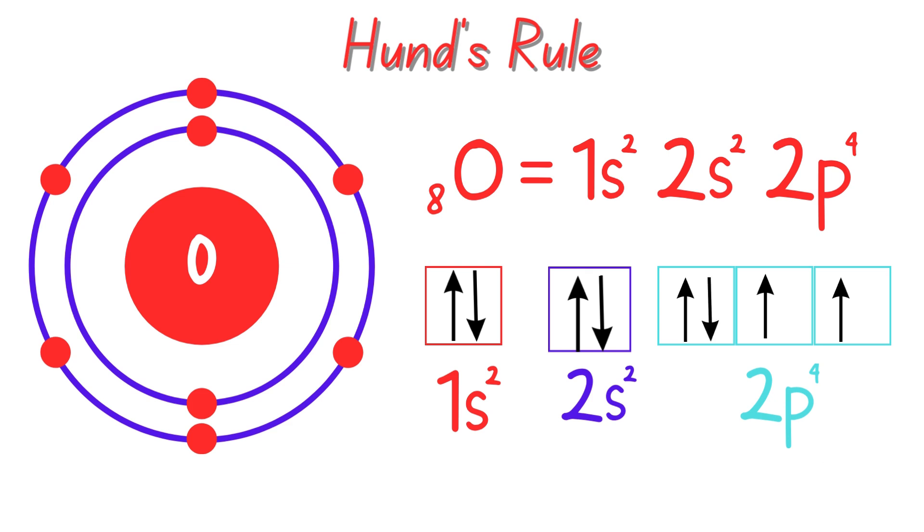This means that if there are multiple orbitals at the same energy level, like the 3p orbitals or the 5d orbitals, each orbital gets one electron before any orbital gets two.